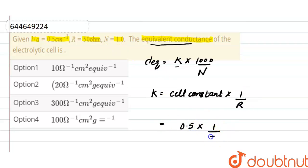So from here, the specific conductivity will be 10 raised to the power minus 2.